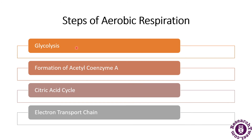The second step is the formation of Acetyl Coenzyme A. In this step, the pyruvate produced from glucose is oxidized in the mitochondria. Two acetyl groups are produced. The newly produced two-carbon acetyl group binds with coenzyme A to produce Acetyl Coenzyme A. This is how the formation of Acetyl Coenzyme A takes place.